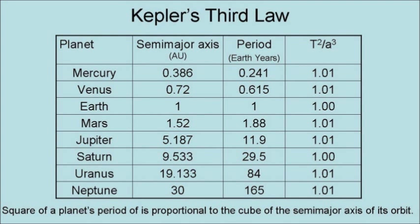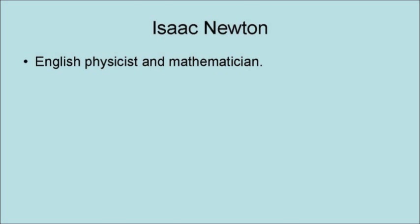Kepler's third law is that the square of a planet's period is proportional to the cube of the semi-major axis of its orbit.